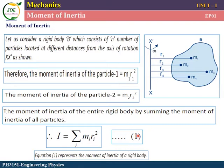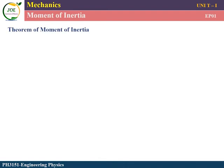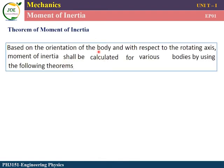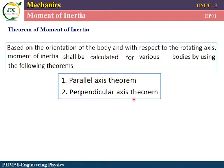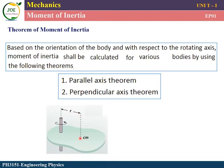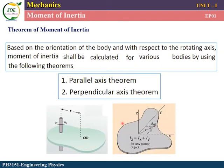Equation number 1: I equals summation of mi r squared. This is the moment of inertia of the system of particles. In an object, the rotation axis determines the moment of inertia. Now we look at parallel axis theorem and perpendicular axis theorem.